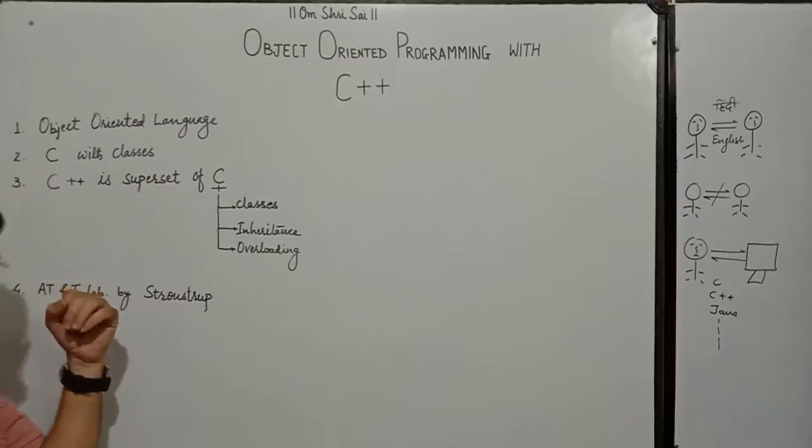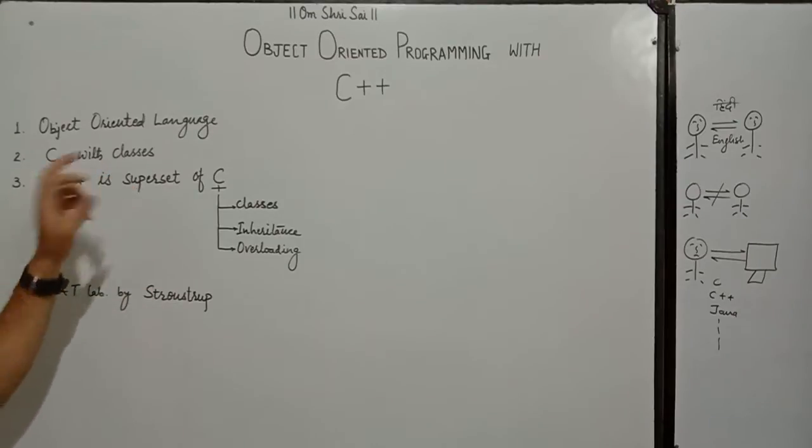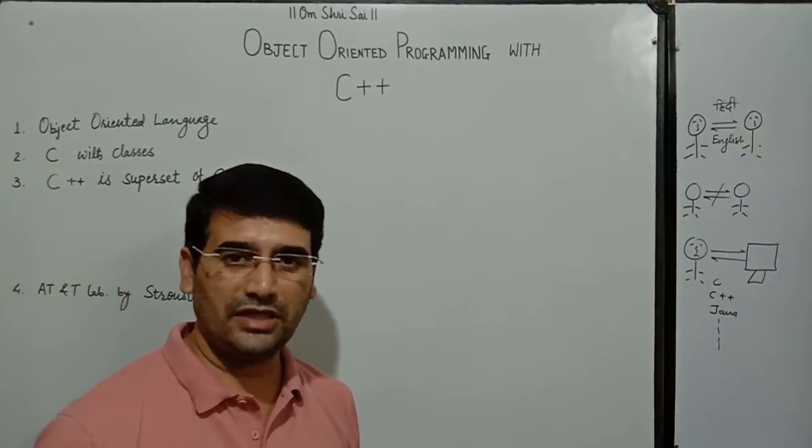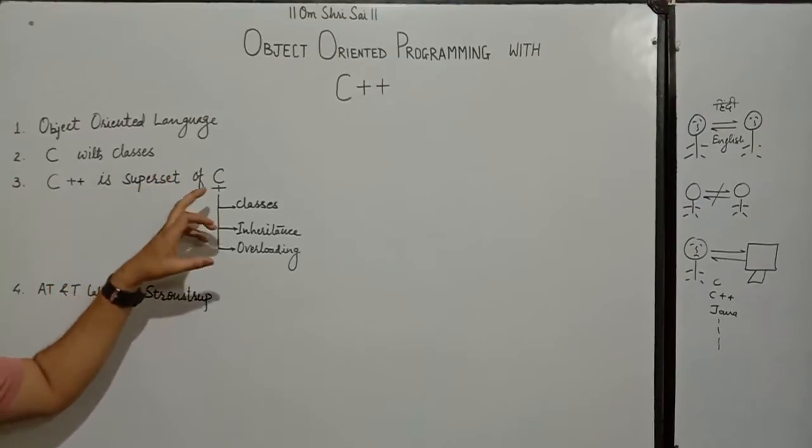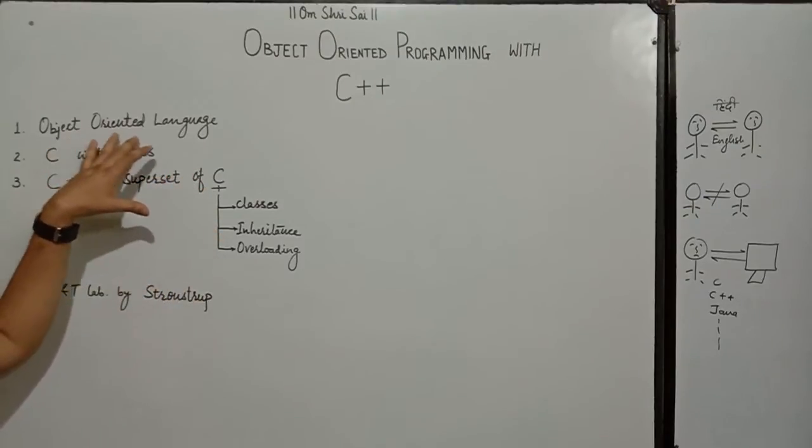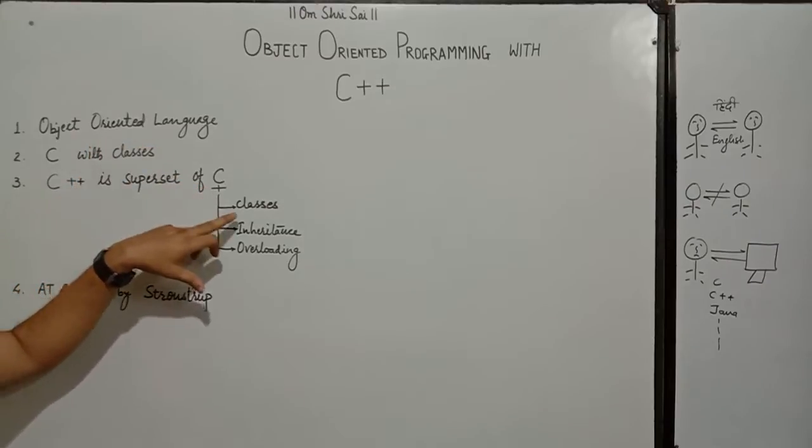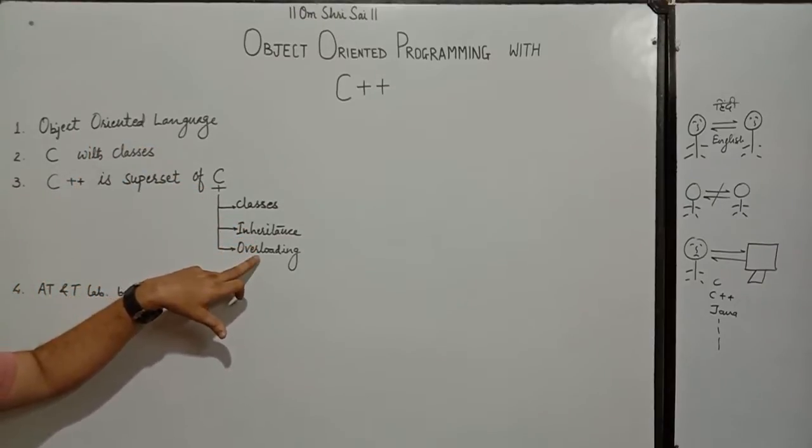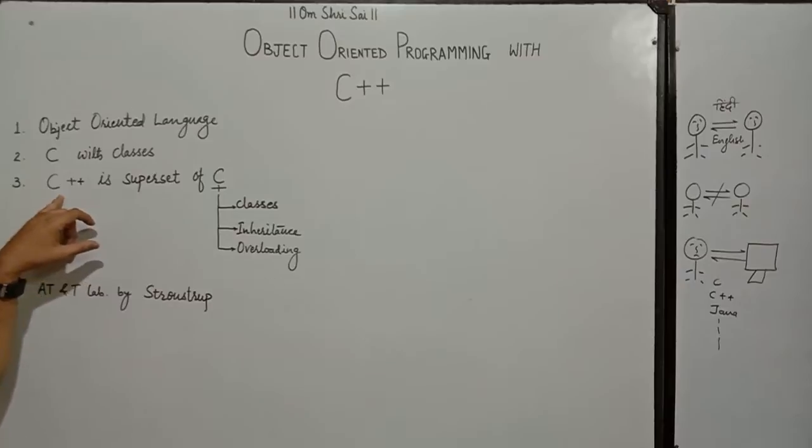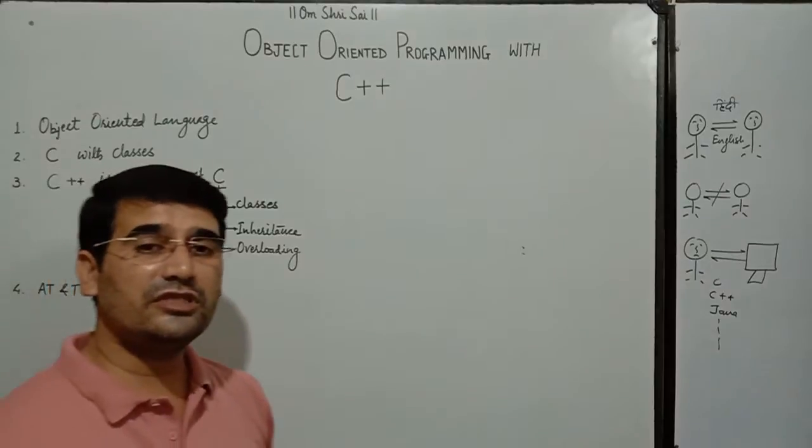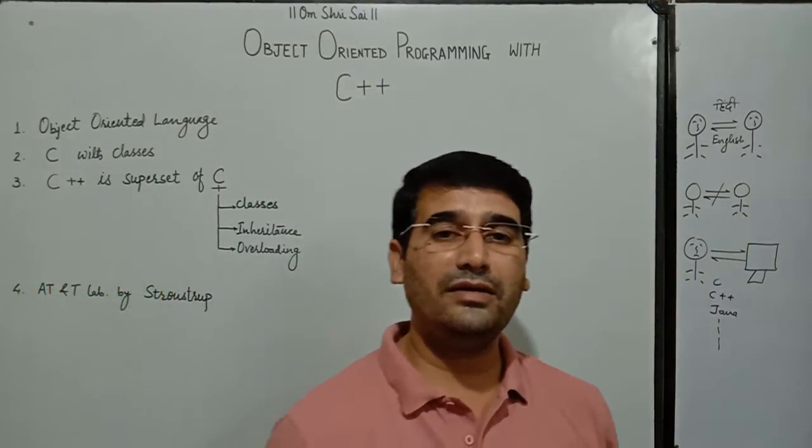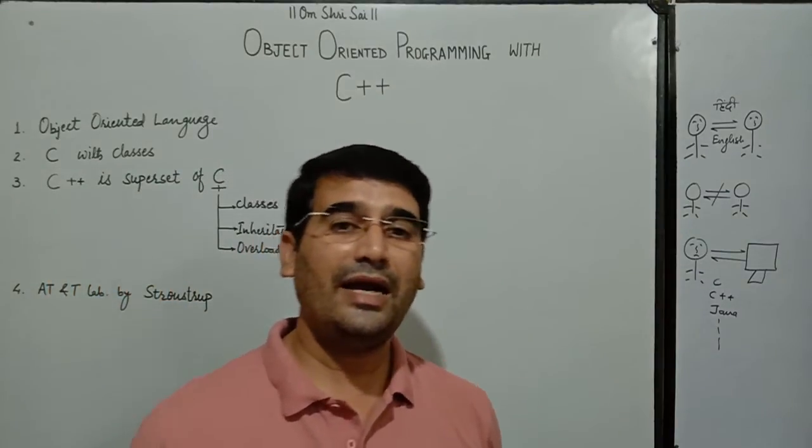Now initially, it was named as C with classes. There is a powerful language that is C. Some features are added to C language to make it object-oriented language. These features are classes, inheritance, overloading and all. So, we can say that C++ is a superset of C. Means, everything which is valid in C will be valid in C++.